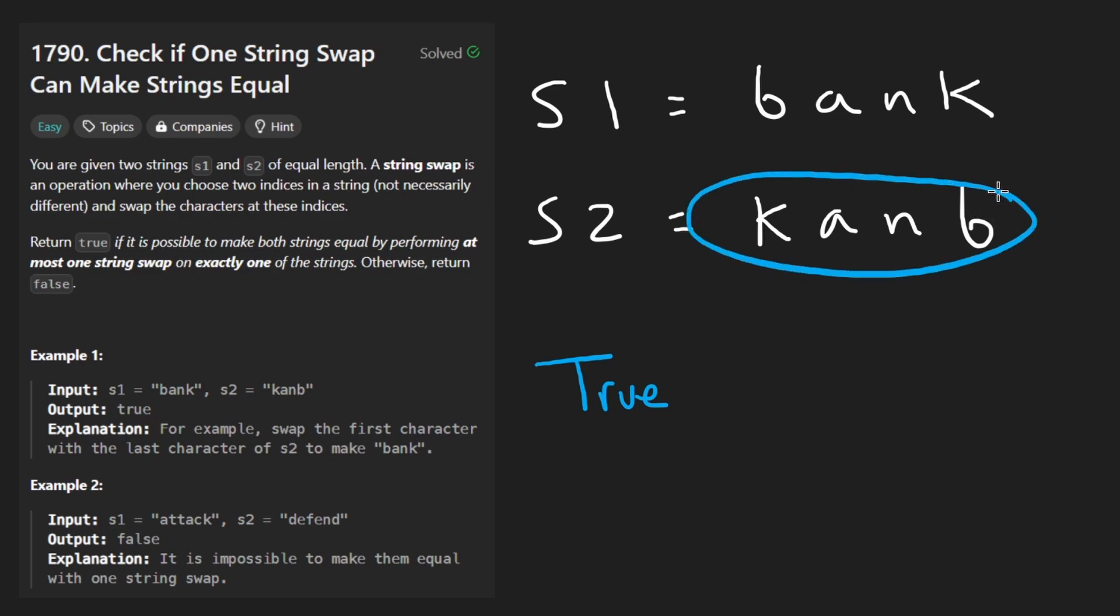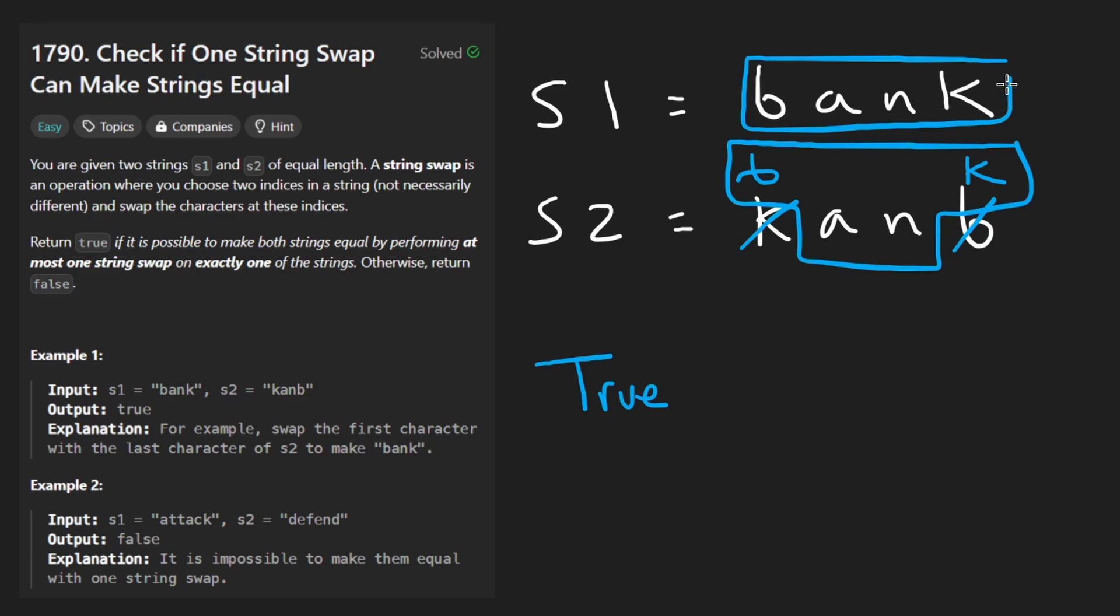So in this string I could perform a swap between two characters. If I perform the swap between these two characters then I will basically move the b to be over here and I'll move the k to be over here. And once you have that you can see that this string is equal to the one above. It spells bank.